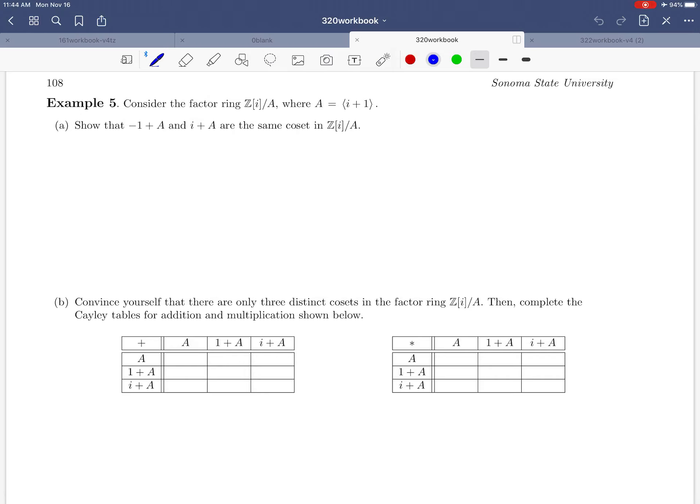In example 5 on page 108 we're going to look at a specific factoring. We're going to look at Z-adjoint i mod A, where A is the ideal generated by i plus 1.